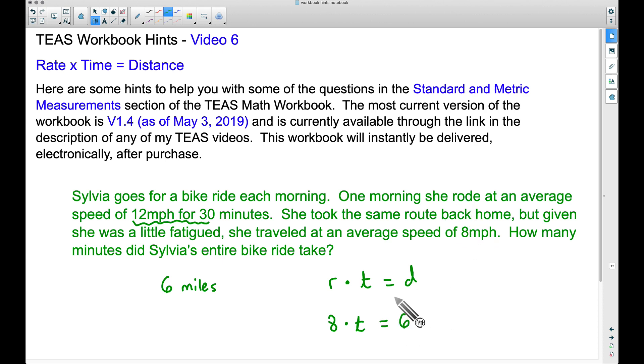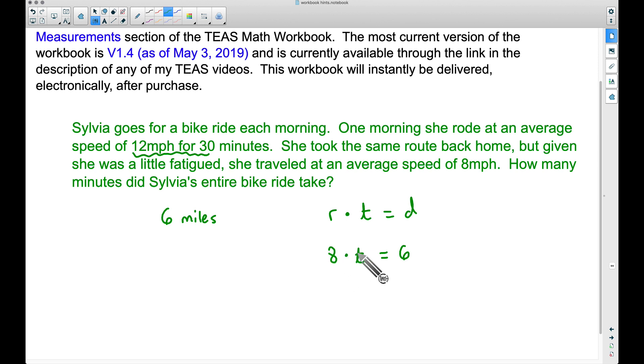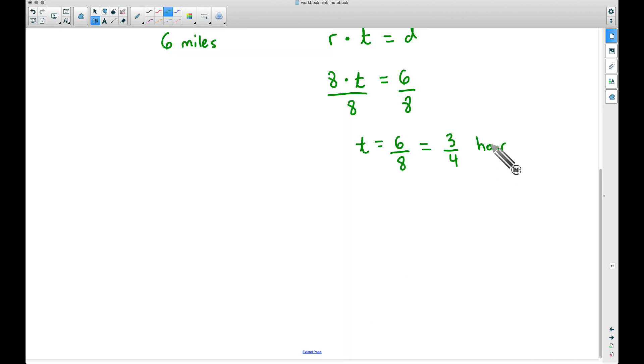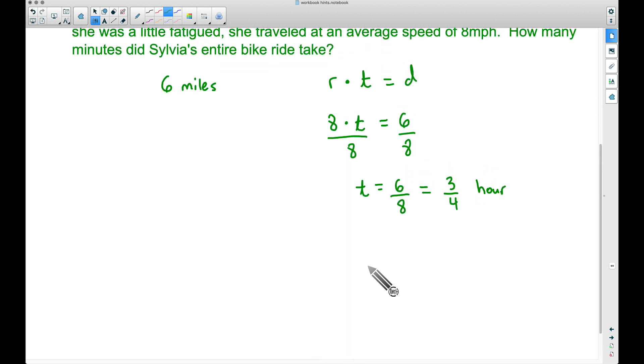And again, that's because she took the same route back home. But I want you to be careful here. Yes, we can solve for t because we have 8 times t is equal to 6. Well we can divide by 8 and this is going to give us t is equal to 6 over 8. But 6 over 8 what? Well let's be careful here. This 8 is miles per hour and the 6 was 6 miles. So when we're talking about time here, we actually have time in hours because this 8 was actually miles per hour. So we have 6 eighths of an hour, and let's go ahead and simplify this: that's 3 fourths of an hour.